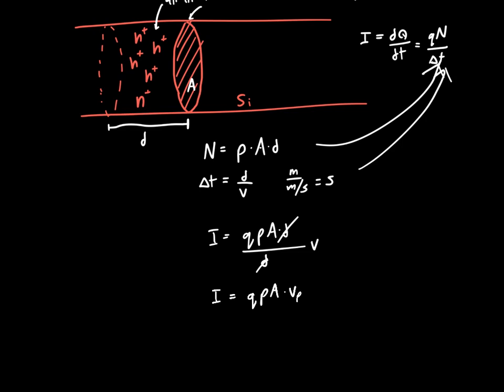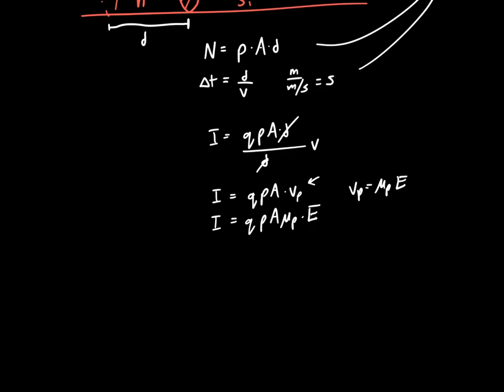But we know we can write the velocity of a hole as just μₚ times the electric field. So we get that I is just equal to QPA μₚ times E. And now typically, we're not interested in the total current in semiconductors. We are when we get to devices. But in terms of analyzing the volume properties of devices, if we don't know the actual area or the actual distances involved, we're more interested in the current per unit area, or I per A. And that's called the current density J. And so J is just equal to I per A, or we just divide this expression by A, which is just QP times μₚ times E.